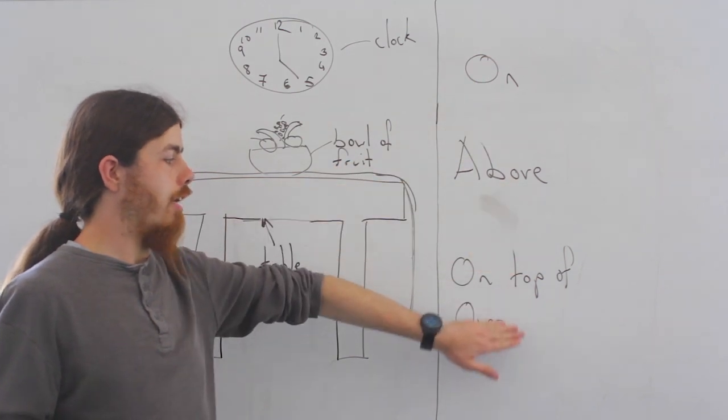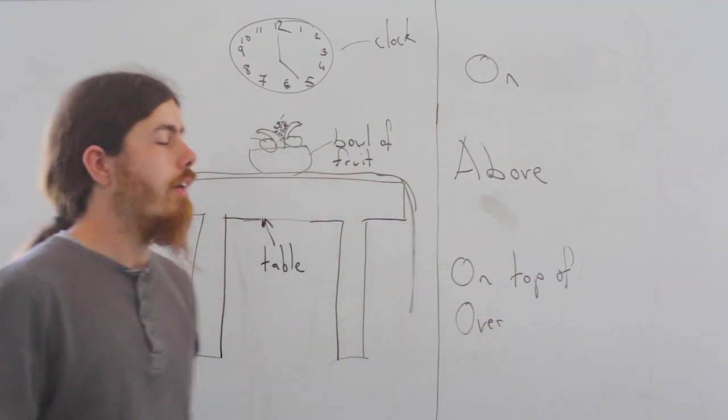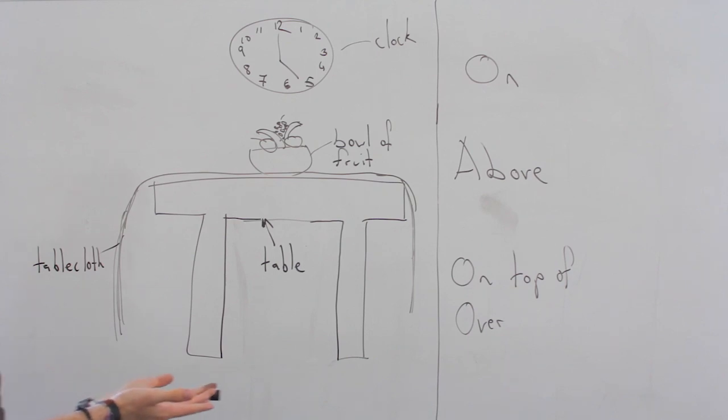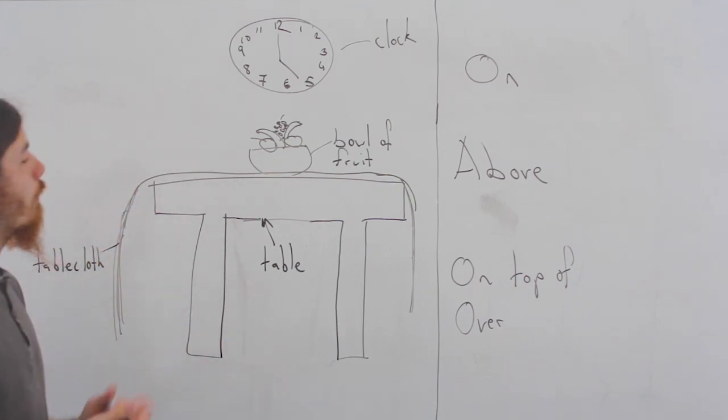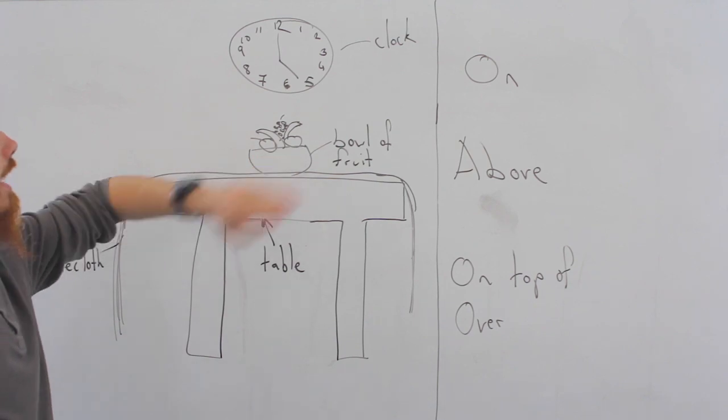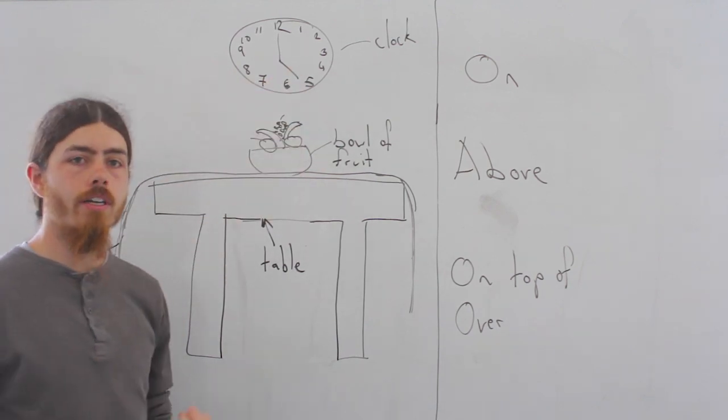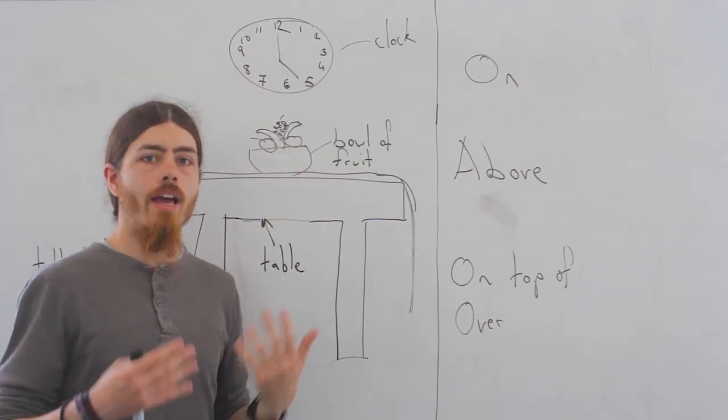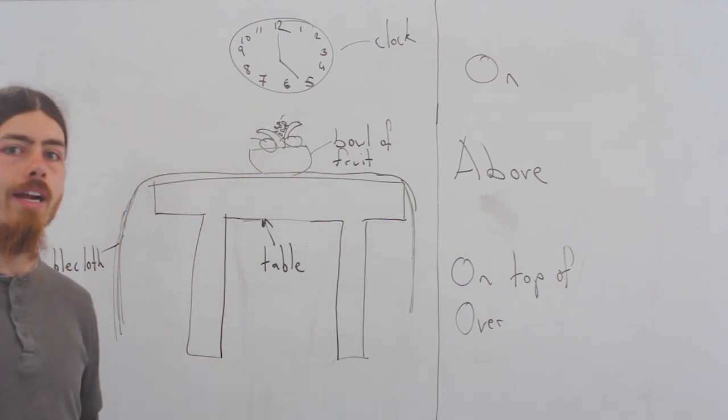So, on, above, on top of, and over. Now, if we look at this lovely picture that I have done myself, we have here a table, a tablecloth, a bowl of fruit, and a cloth. And we're going to talk about these objects and their location with regards to each other.